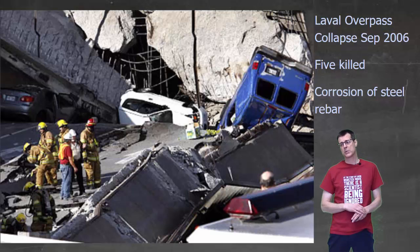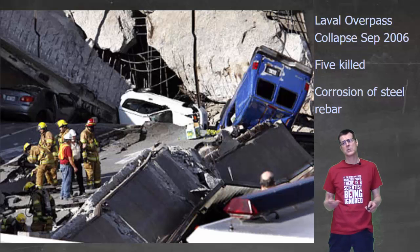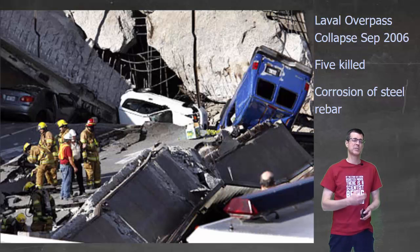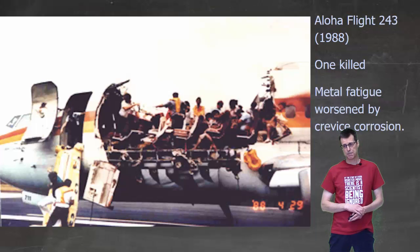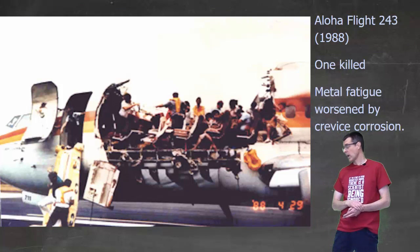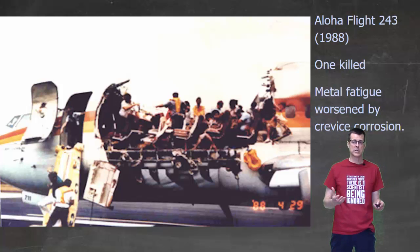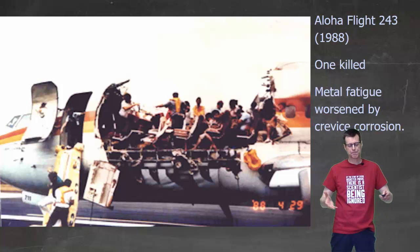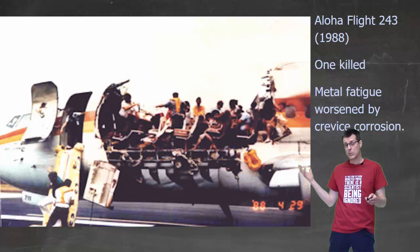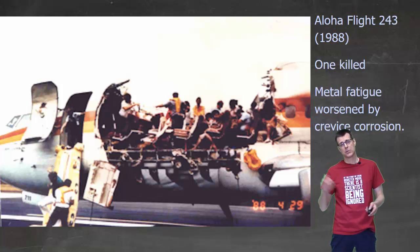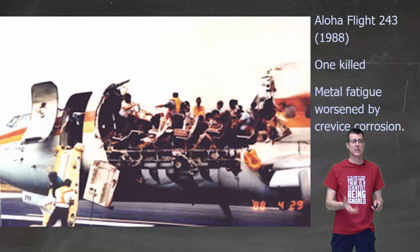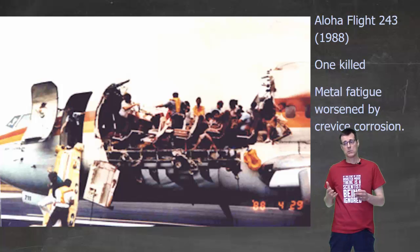In Laval, which is also in Quebec, a similar thing happened — corrosion of the steel rebar caused an overpass to collapse, and five people died in that accident. Back when I was younger, I remember this being in the news: an airplane flight coming back from Hawaii where part of the fuselage tore off. What it came down to was metal fatigue, but it was also made worse by corrosion.